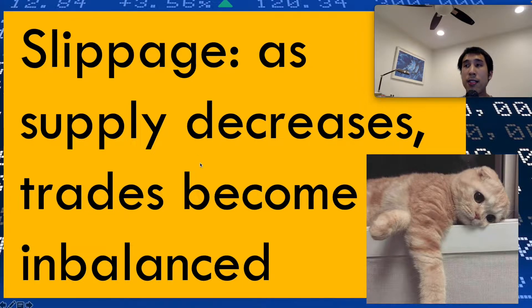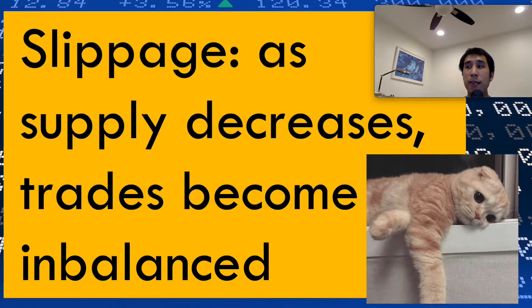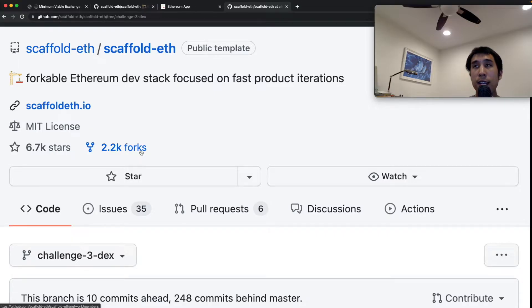Slippage refers to the fact that as the supply in a liquidity pool decreases, the trades become imbalanced because the tokens get more expensive. When a liquidity pool is first initialized, the ratios of the two tokens are equal. But if everyone wants token A and trades token B for it, token A's supply becomes scarce. The next person must provide far more token B to get the same amount of token A. The best way to avoid slippage is for the pool to have a massive supply, which is why customers gravitate toward large, well-known exchanges.